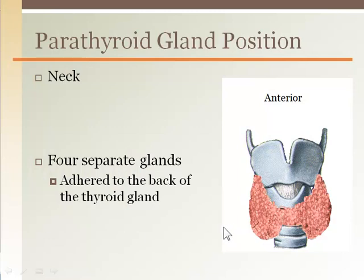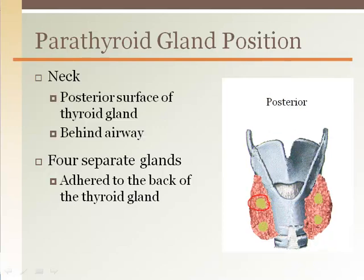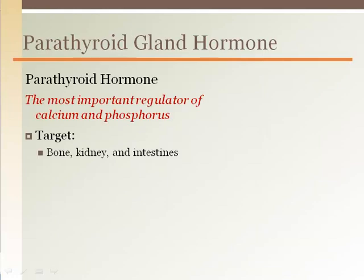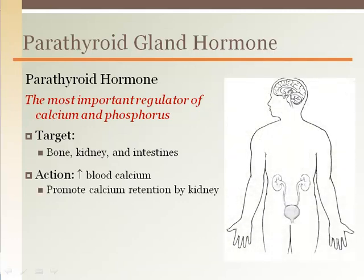There are four separate parathyroid glands located on the posterior surface of the thyroid gland. Parathyroid hormone is produced by chief cells in the parathyroid gland. Its role is to increase blood calcium levels, and it is the most important regulator of calcium and phosphorus in the body.